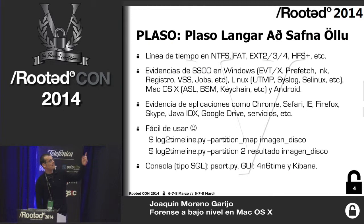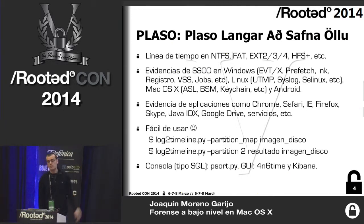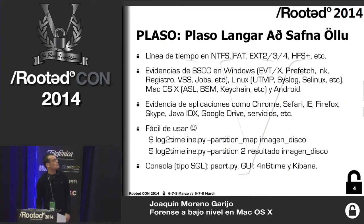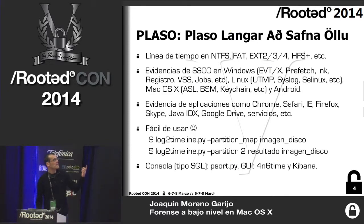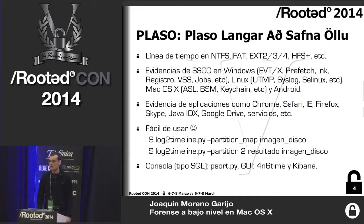PLASO is the program we use. We give it the image, tell it about the partitions of the hard drive — only with those two lines. You go for coffee, come back, and you have the results. It saves quite a lot of time. It also has a console interface and a graphical one — the first is from PLASO and the other from Elasticert.